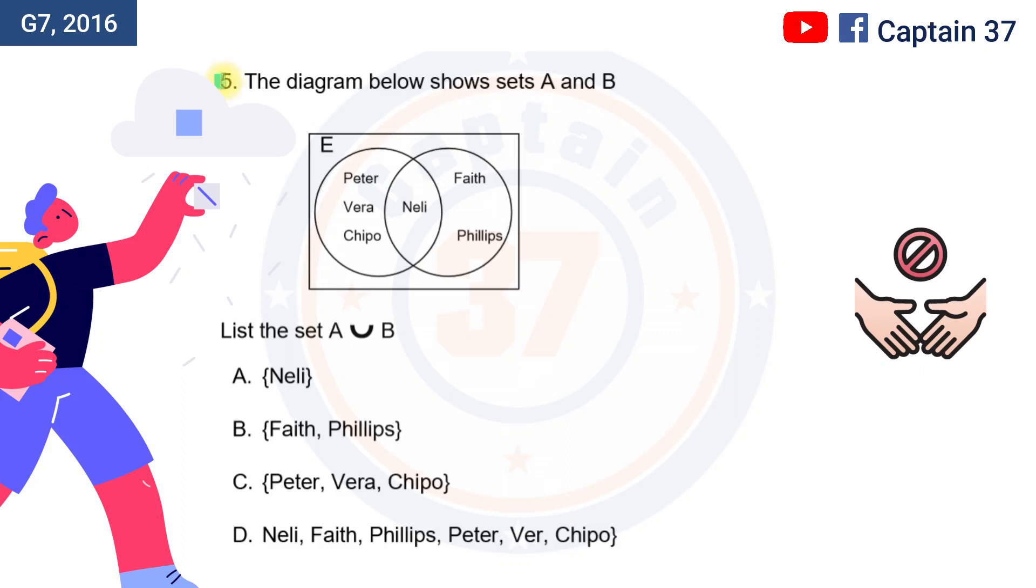Question number five. The diagram below shows sets A and B. We need to list the set items that make up A union B.